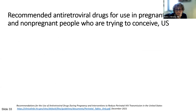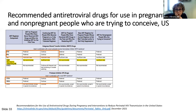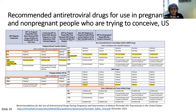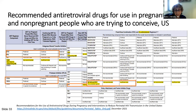Currently, dolutegravir and raltegravir are preferred integrase strand transfer inhibitors for starting and continuing ART in pregnancy, and atazanavir and darunavir are the preferred PIs. TAF was included as preferred only last year after adequate safety data was obtained. Long-acting cabotegravir and rilpivirine, which is seeing increasing use in adult populations, are currently not recommended. There are limited pharmacokinetic data on long-acting CAB for prevention, and no PK and safety data yet on this combination in pregnancy. It will be studied in an upcoming IMPACT trial.